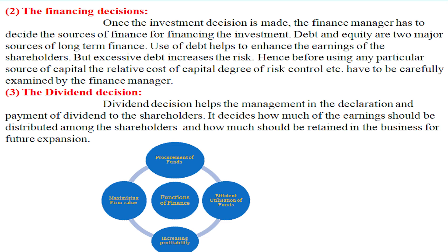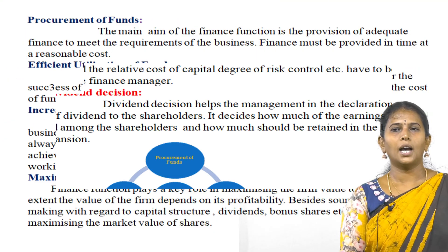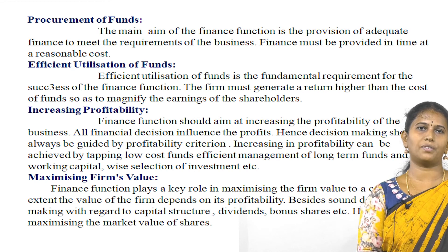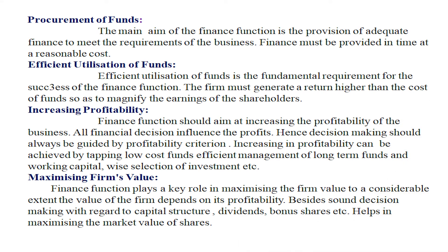Next we have the functions of finance management. There are four functions: first is procurement of funds, efficient utilization of funds, increasing profitability, and maximizing firm value. The main aim of the finance function is the provision of adequate finance to meet the requirements of the business. Finance must be provided in time at a reasonable cost. Funds are mostly used in the business for effective utilization. Effective utilization of funds is the fundamental requirement for the success of the finance function. The firm must generate a higher return than the cost of funds so as to increase the earnings of the shareholders.